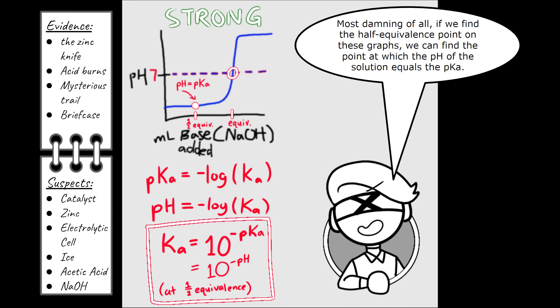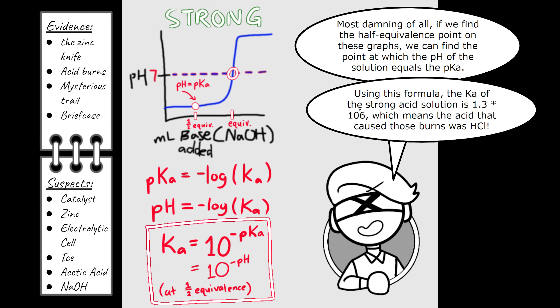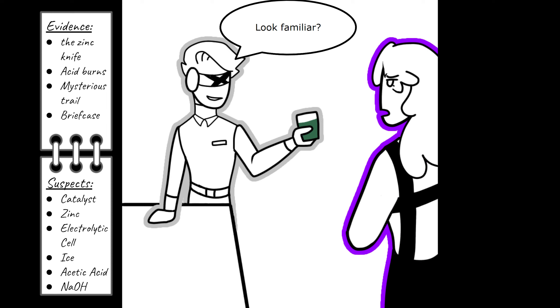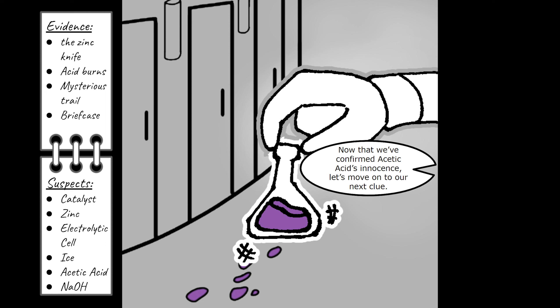Most damning of all, if we find the half equivalence point on these graphs, we can find the point at which the pH of the solution equals the pKa. Using this formula, the Ka of the strong acid solution is 1.3 times 10 to the power of 6, which means the acid that caused those burns was HCL. Wait, detective, where could it have come from? Look familiar? The HCL cocktail! Now that we've confirmed Acetic Acid's innocence, let's move on to our next clue. The mysterious trail that led from Catalyst's sleeping car into the dining car.